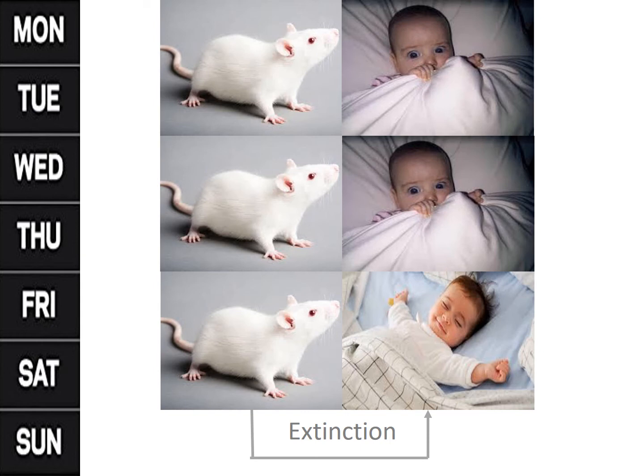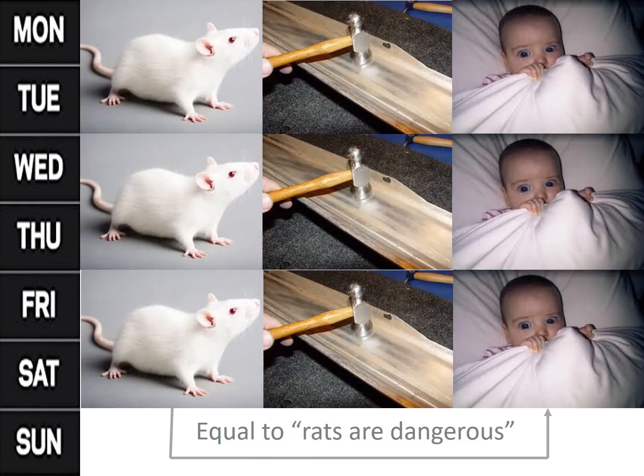One mechanism is called rule-based learning. According to classical conditioning and operant conditioning, we extract rules from experiences. For example, Little Albert gradually learned that white rats precede unpleasant noises, or we might learn that acting rudely tends to precede disapproval.